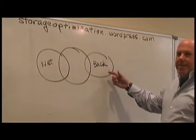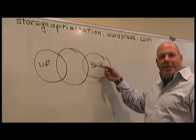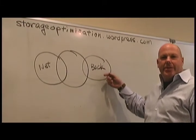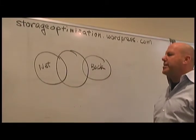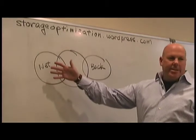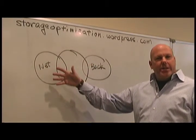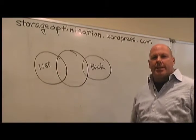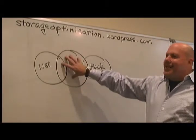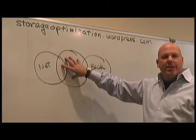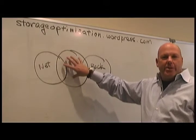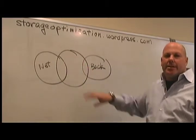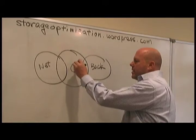In the backup space, there's been wild successes using deduplication to do data reduction. Data Domain would be a good example of that. In the WAN space, there's examples like Riverbed where data reduction has been wildly successful. Nobody's attacked this core problem right in the middle of how we do data reduction for your real online files. And this is the problem that Ocarina is solving right here.